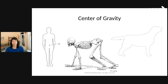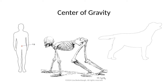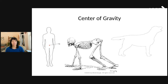Next, we're going to talk about the differences in our center of gravity or center of mass. In humans, our center of mass sits just above the base of the pelvis, right around the belly button area. In a dog, the center of gravity actually sits just behind their shoulder blades, kind of in the front half of their chest cavity. Because of this, dogs tend to weight bear about 60 to 65% of their weight through their front limbs and about 35 to 40% through their hind limbs.